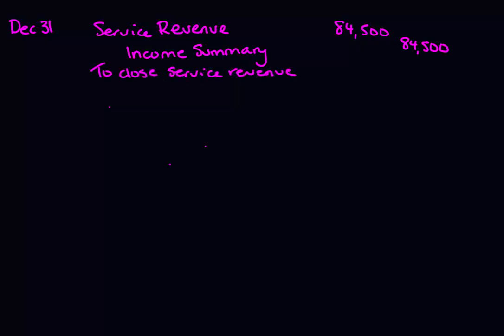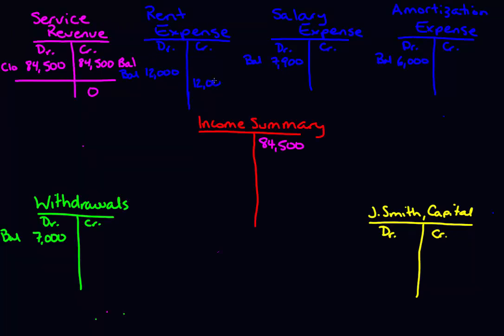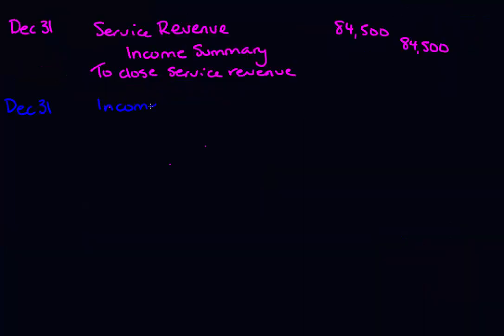Now let's do the same thing for expenses. For our rent expense, we have a debit balance of $12,000. We want to bring the balance of rent expense down to zero, so we need to credit it by $12,000. I wrote CLO beside the balance — that stands for closing entry. We're crediting rent expense, and the debit goes to the income summary account. In journal entry form: debit income summary for $12,000 and credit rent expense for $12,000.